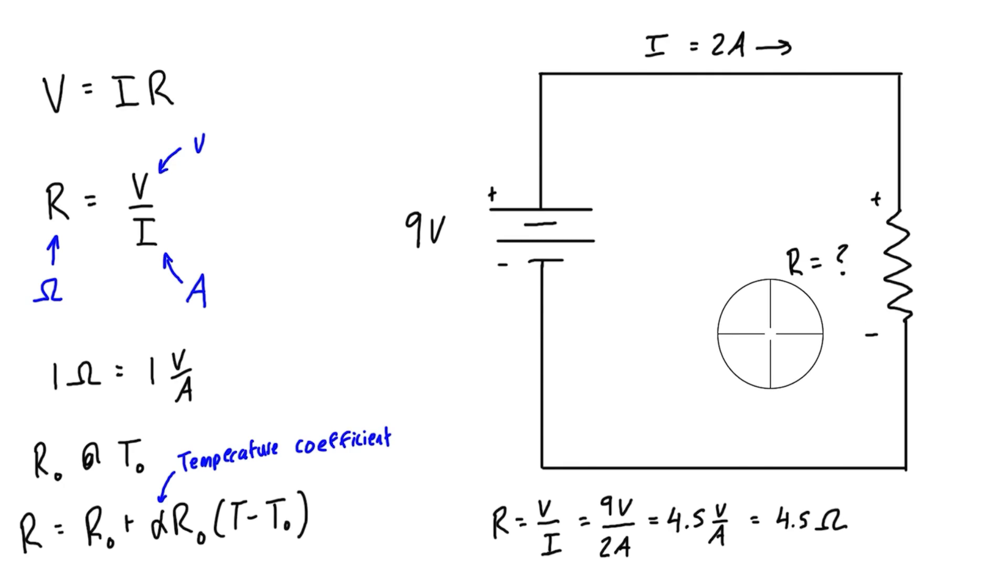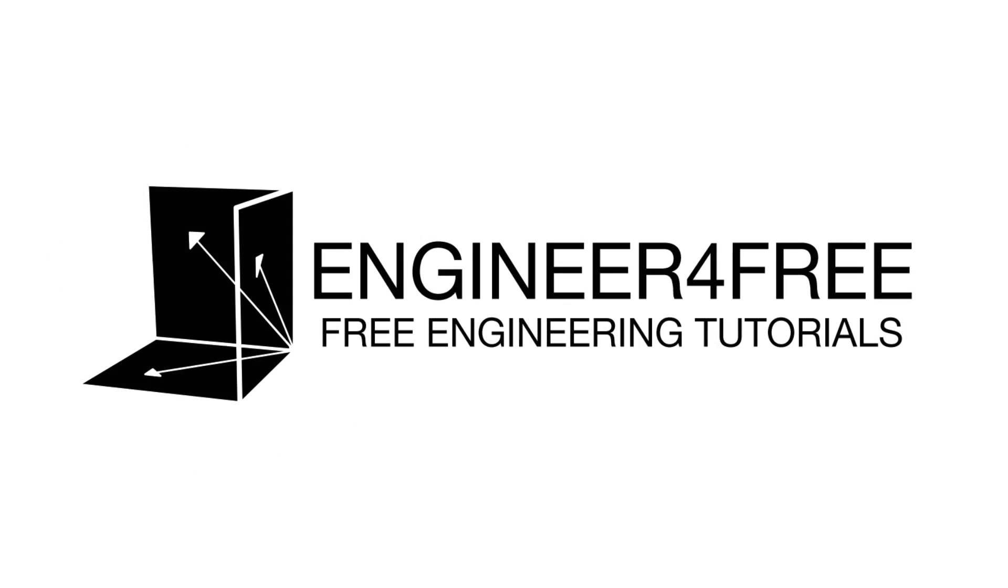But yeah, that's just a really quick introduction to what resistance is. Just know that it's in units of ohms, and one ohm is equal to one volt per amp. Alright, that's it for this video, and I will see you in the next one, and we will quickly talk about resistivity.